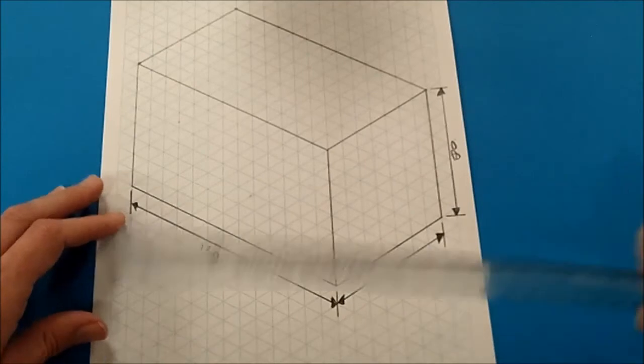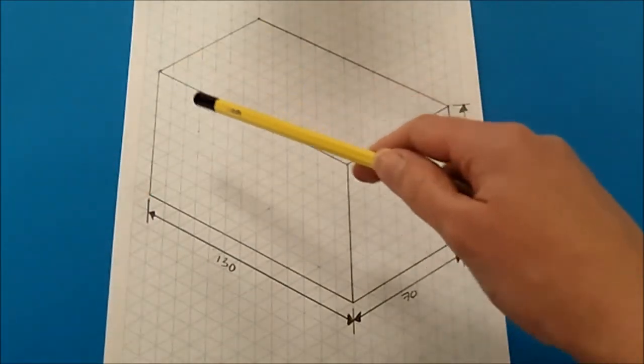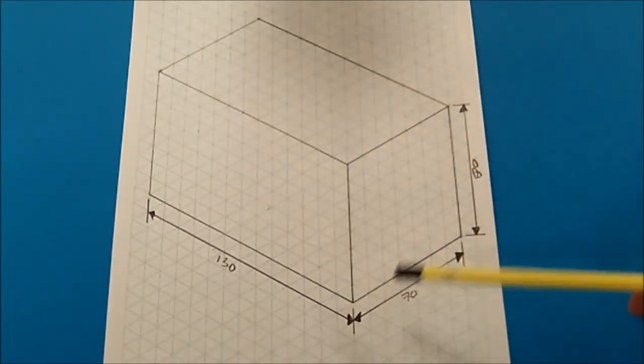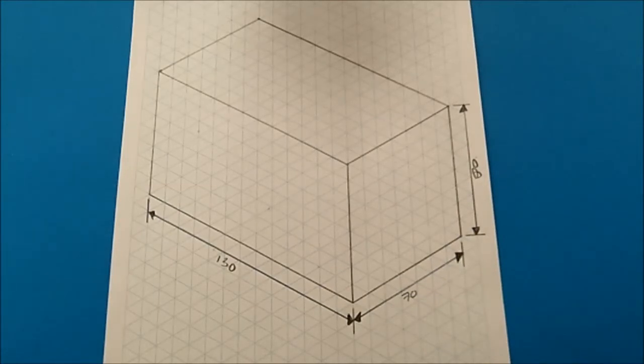Now that concludes our first tutorial on how to get your grid and your cuboid drawn up with dimensions. In the next tutorial I'll talk to you more about hidden lines and added details.